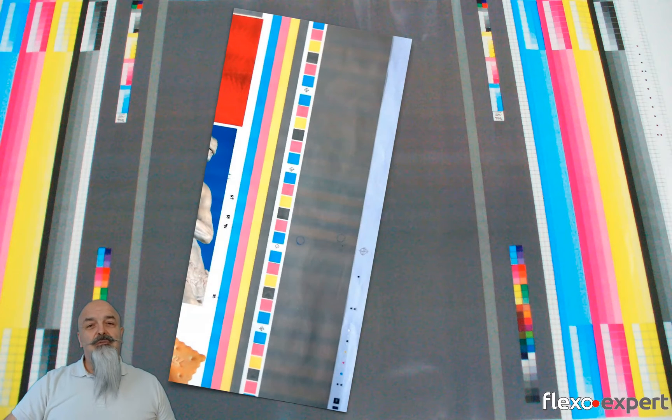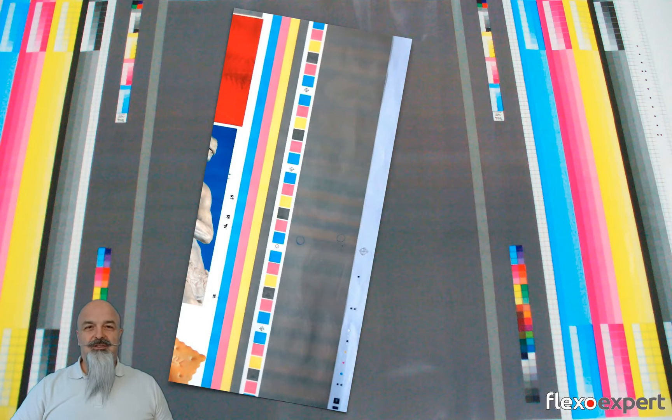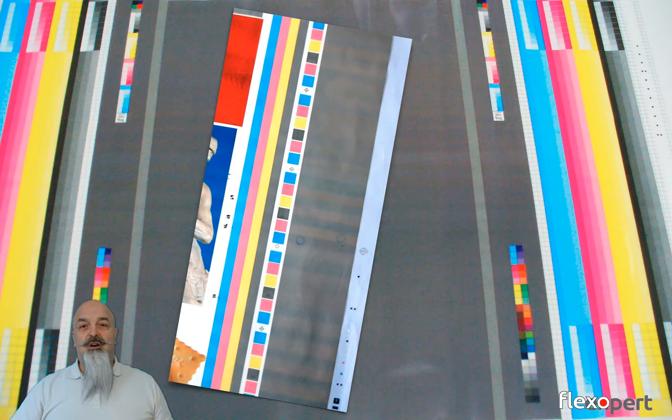You know, the problem that mostly affects flexo printing is not much numerical from prepress, but it is pretty more mechanical. It shows like an intermittent slurring on the printed area across the printing width. What are the causes of these defects?